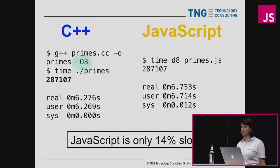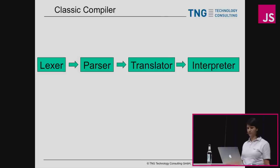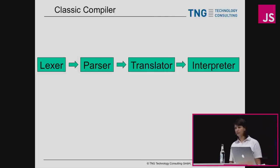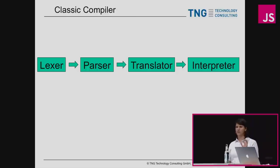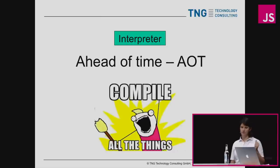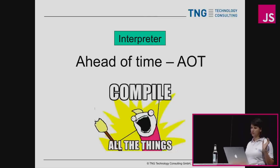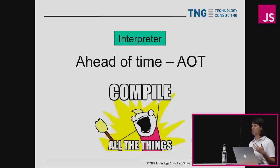In the next 20 minutes we'll look at what JavaScript engines are doing to achieve this massive performance. Your classic compiler has four components: a lexer that turns source code into tokens, a parser that generates the abstract syntax tree, a translator that turns that tree into bytecode, and then the bytecode is interpreted. There are basically two types of compilers: ahead-of-time compilation and just-in-time compilation. With ahead-of-time, you compile everything before you run it, optimize the machine code if possible, and then run it — C++ is a clear example, with a clear separation of compile time and run time.